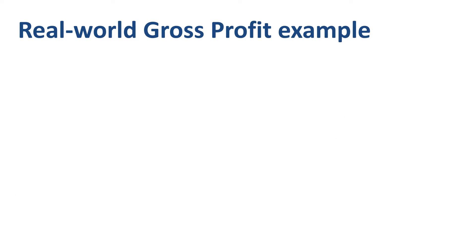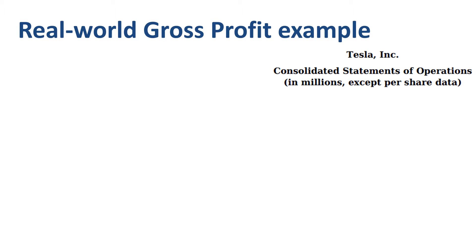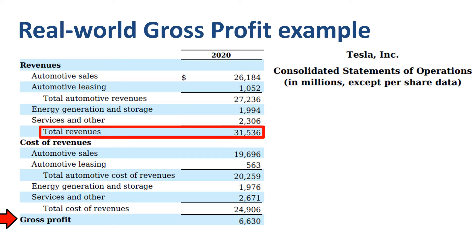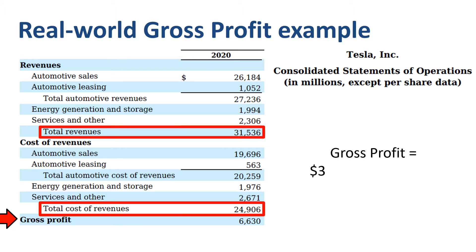You have probably heard of a company called Tesla. Here's the first part of Tesla's consolidated statement of operations, or income statement. Gross profit is right here — $6.6 billion for 2020. Gross profit is calculated by taking total revenues and deducting total cost of revenues: $31.5 billion minus $24.9 billion equals $6.6 billion.